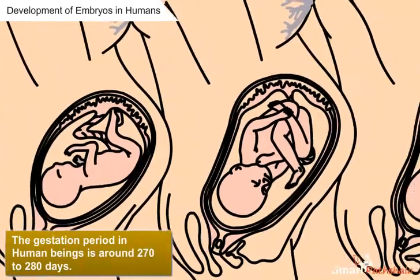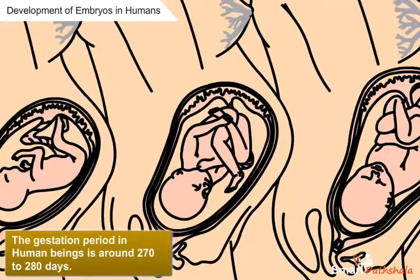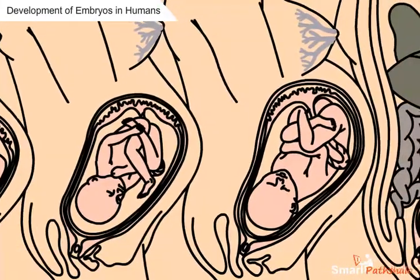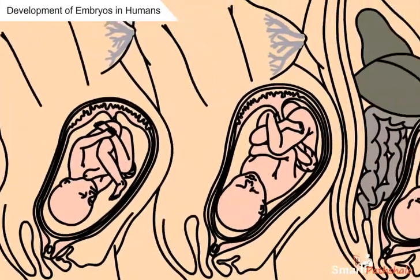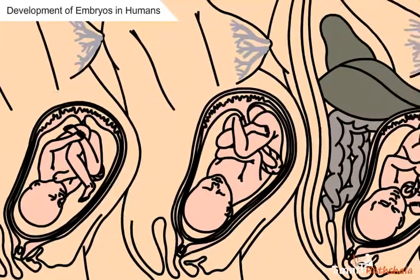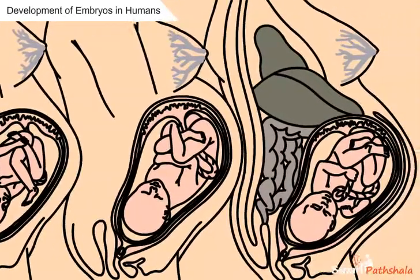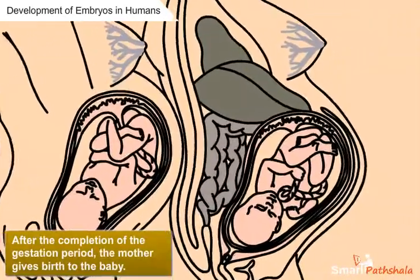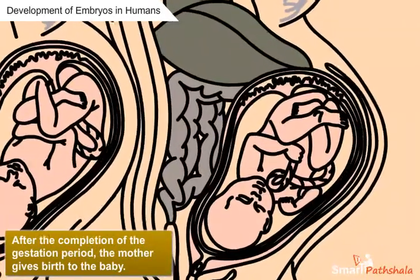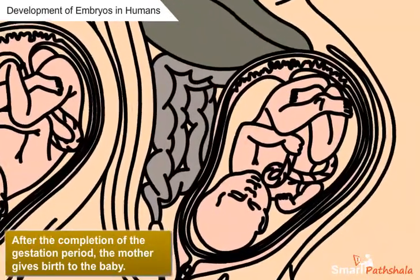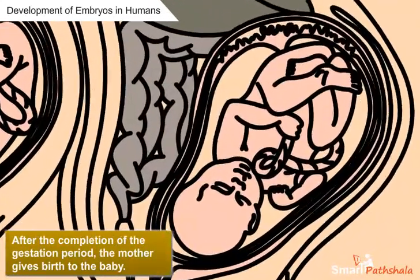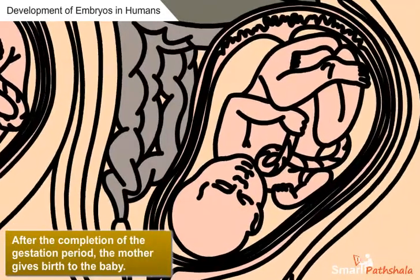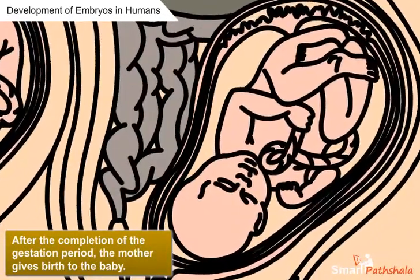The gestation period in human beings is around 270 to 280 days. In the gestation period, the complete development of the fetus takes place, and after the completion of the gestation period, the mother gives birth to the baby. This is how development of the embryo takes place in humans.